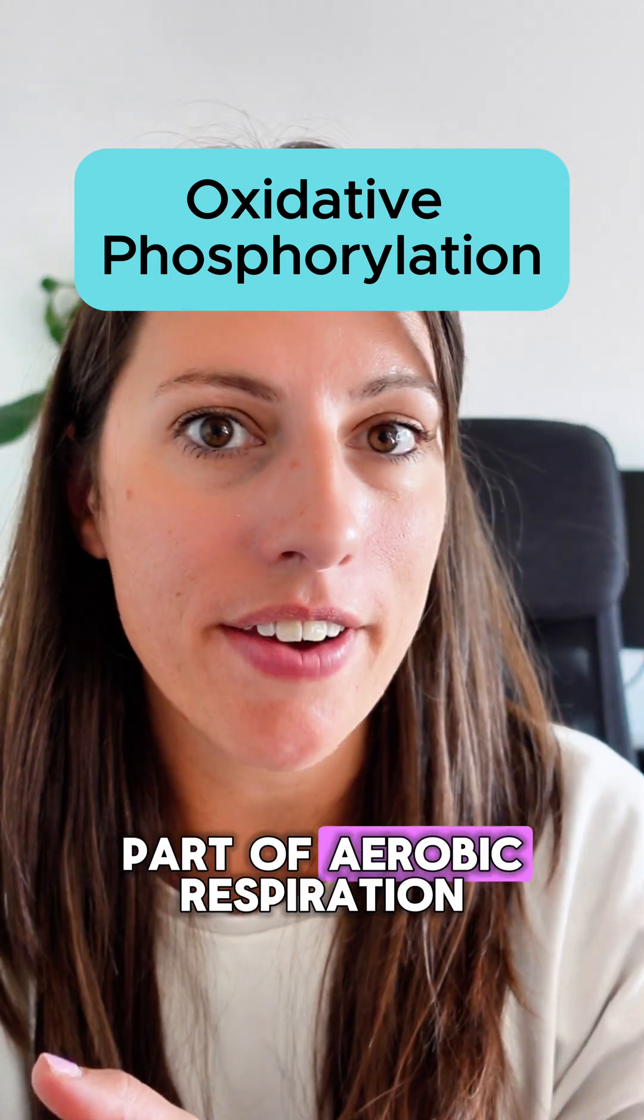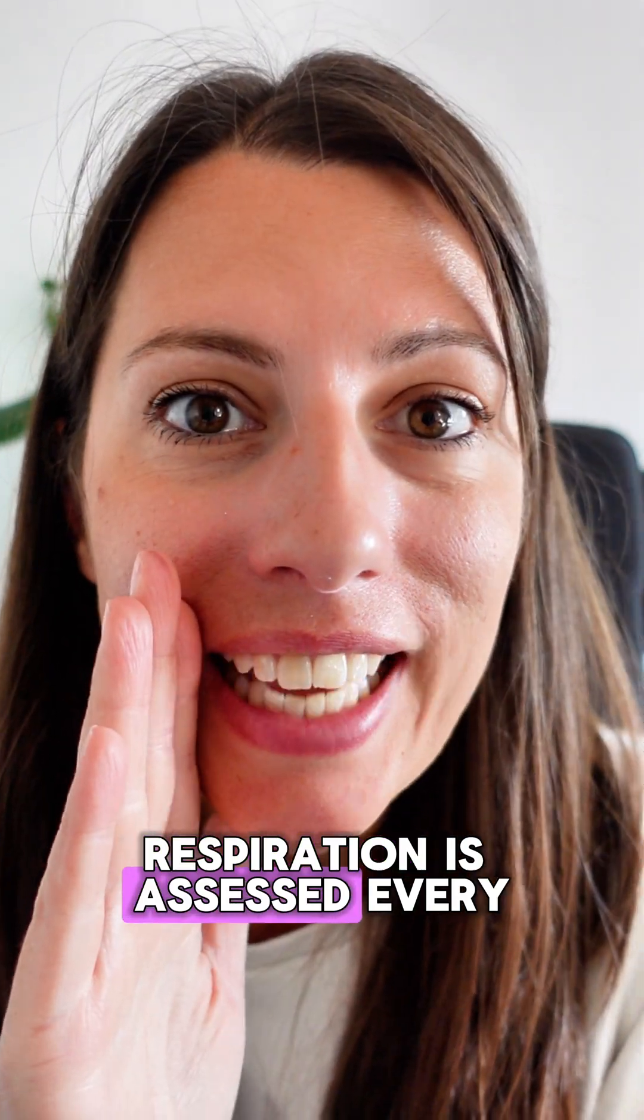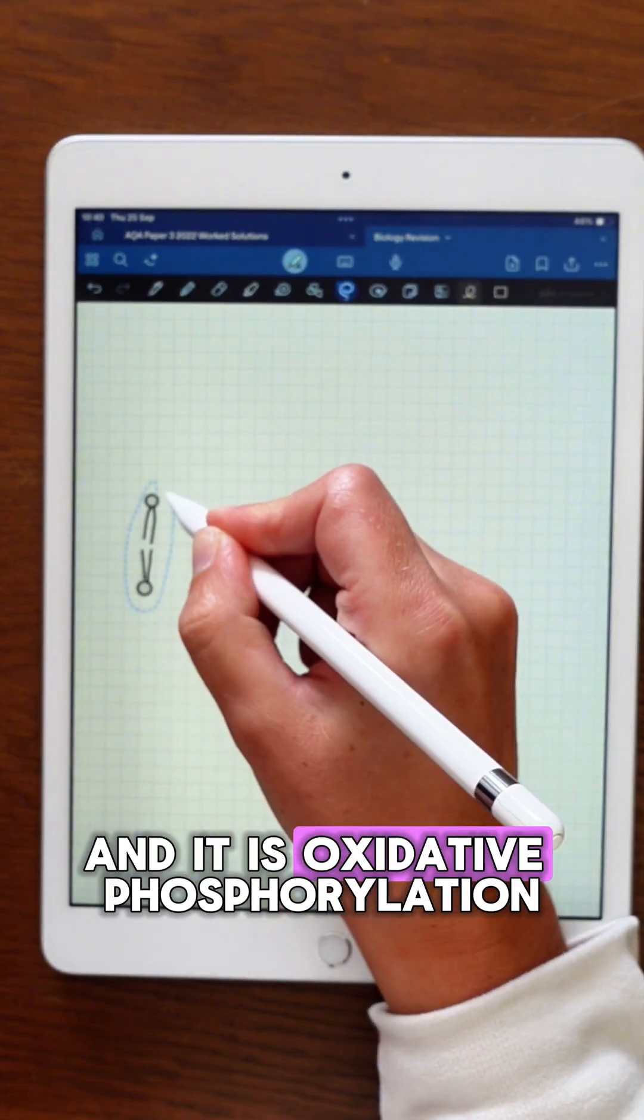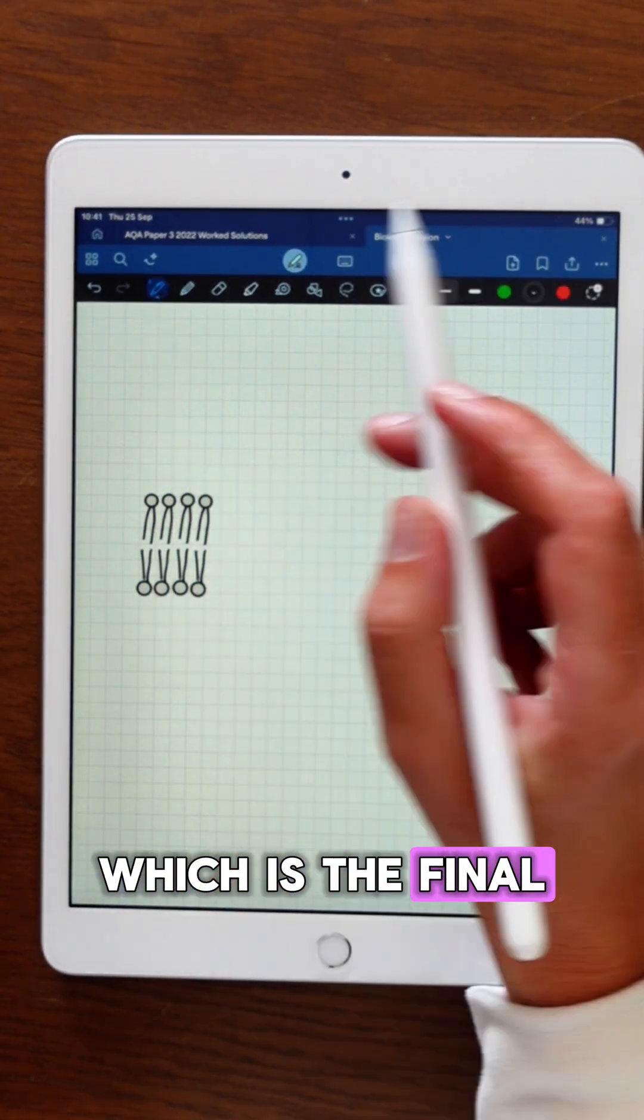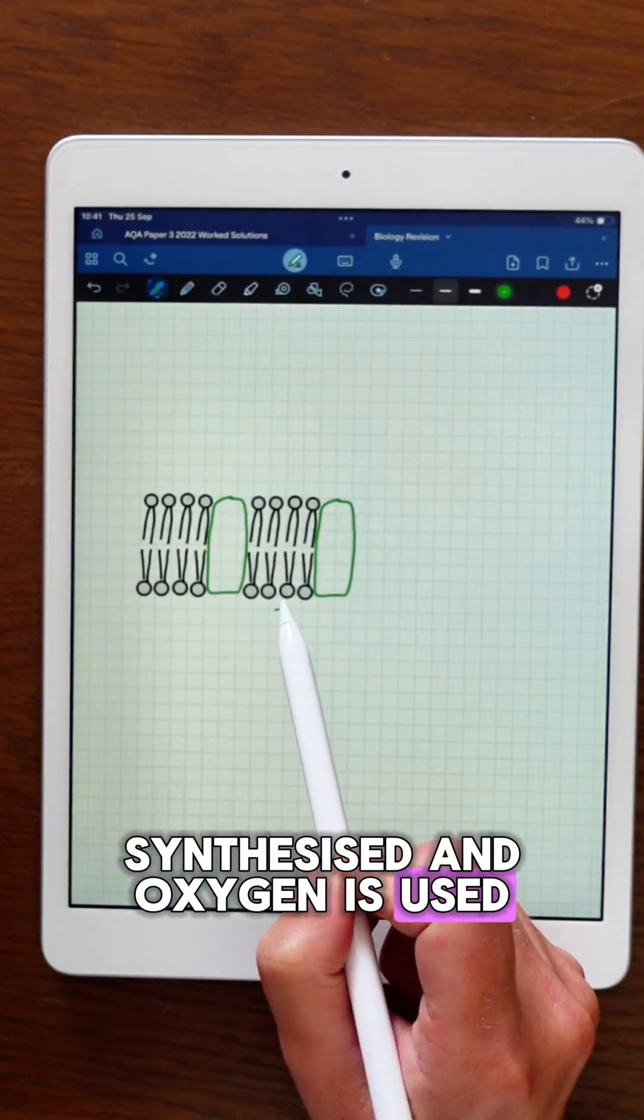This is the hardest part of aerobic respiration and it is a must-learn because respiration is assessed every single year. It is oxidative phosphorylation, which is the final stage of aerobic respiration where most ATP is synthesized and oxygen is used.